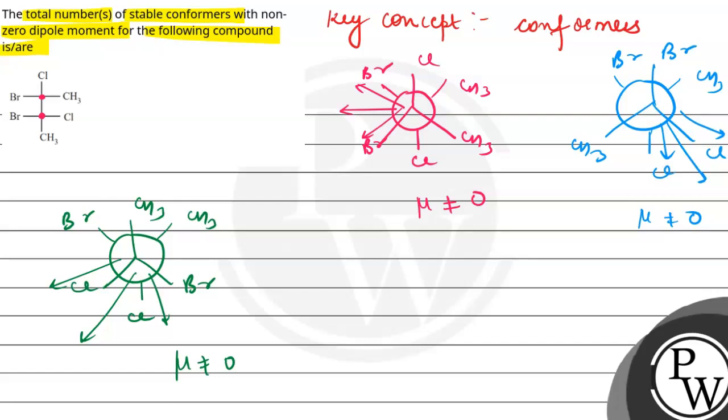So in total we have 3 conformers that are non-zero. So the answer is 3. Hope you find the answer. Best of luck.